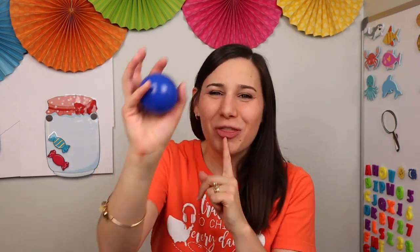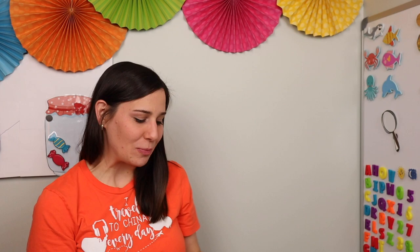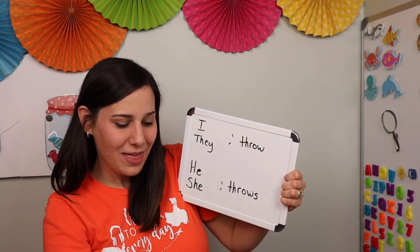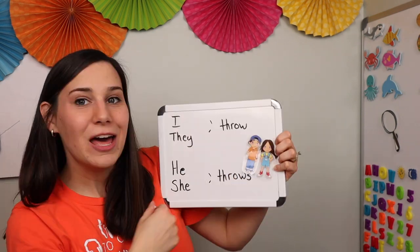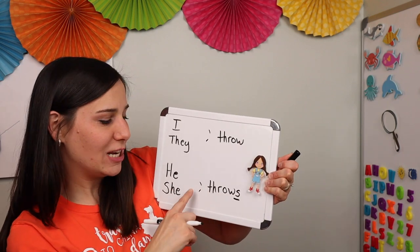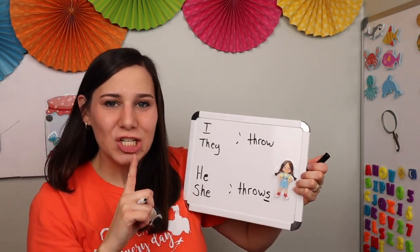Slide six — we're jumping back to Introduce, this time for the verb 'throw.' Say it clearly: 'Throw, throw.' Then put it in sentences to help the student expand their knowledge. Emphasize the S: 'She throws.' Then contrast: 'They throw.' Here's where the whiteboard comes in handy — write it out: 'I throw, they throw.' Then get down to he and she and emphasize: 'She throws, he throws.'